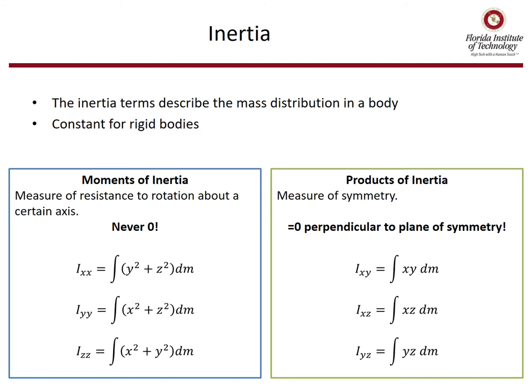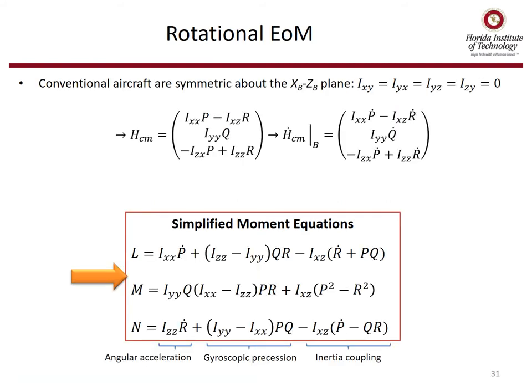We're going to use our mass moments of inertia. To review, there are moments of inertia and products of inertia. Moments of inertia are never zero, while products of inertia can be zero depending on whether there's a plane of symmetry. For conventional aircraft, assuming symmetry about the x-body, z-body plane, many of those derivatives go to zero, and we end up with simplified moment equations containing angular acceleration, gyroscopic precession, and inertia coupling terms.